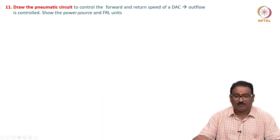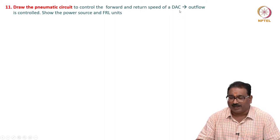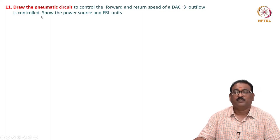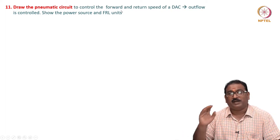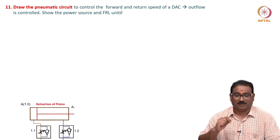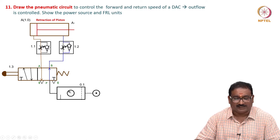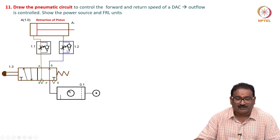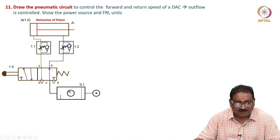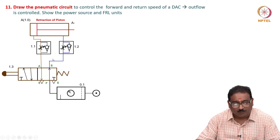Next: draw the pneumatic circuit to control the forward and return speed of a double-acting cylinder, where outflow is controlled. Show the power source and FRL unit. Both forward and return should be controlled but outflow is controlled. The position of the check valve matters. For retraction, the power source comes here - it bypasses through the check valve on the inlet side. Inlet is not controlled. On the outlet, when the piston pushes, the outlet cannot pass through the check valve - it passes through the metered orifice. Outflow is controlled, so it retracts very slowly even though full flow is coming in.